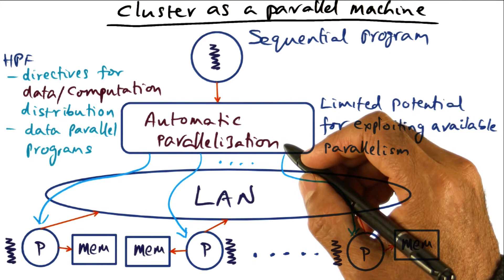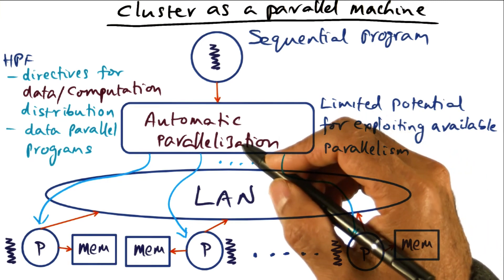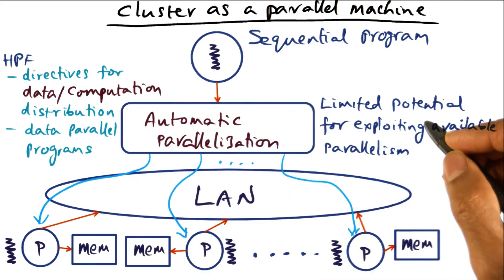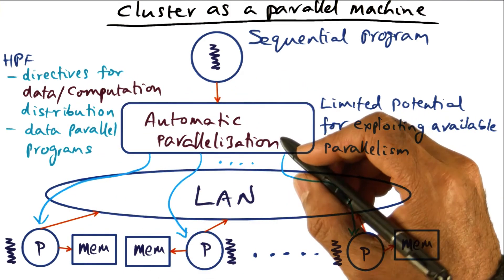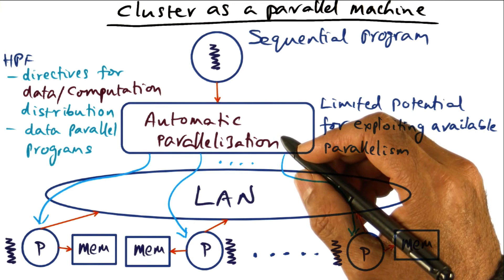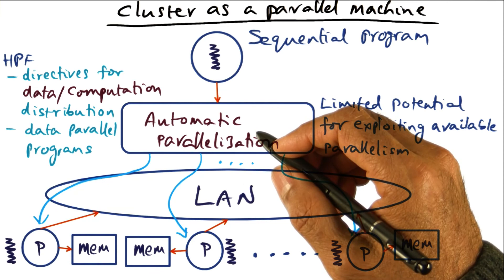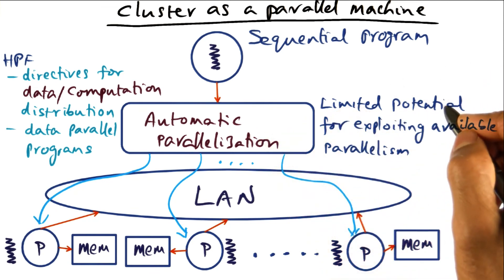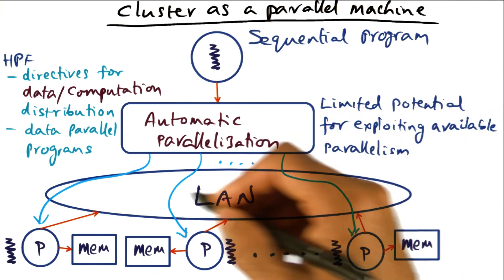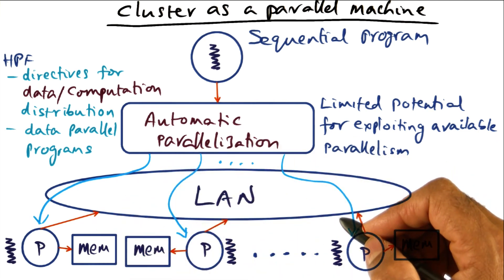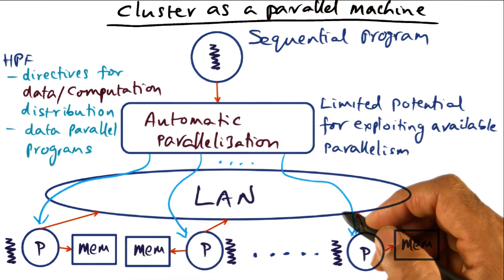This kind of automatic parallelization or implicitly parallel programming works really well for certain classes of programs called data parallel programs. In such programs, for the most part, the data accesses are fairly static and determinable at compile time. So in other words, there is limited potential for exploiting the available parallelism in the cluster if we resort to implicitly parallel programming.